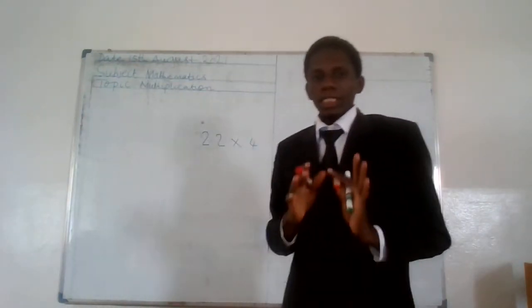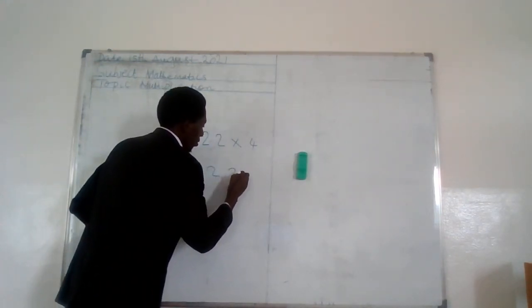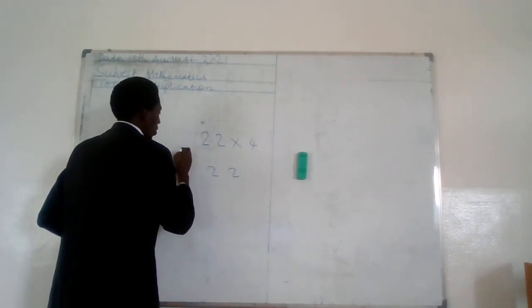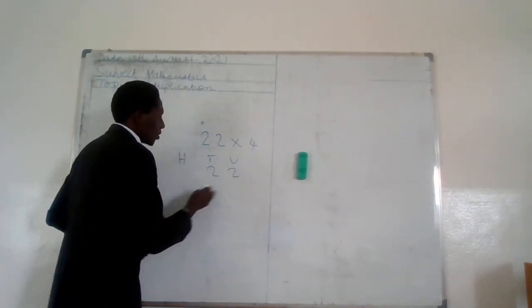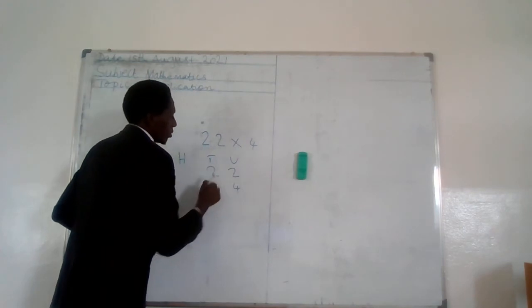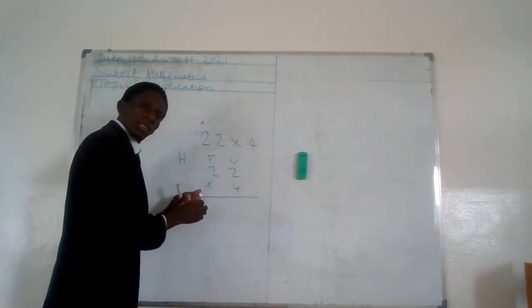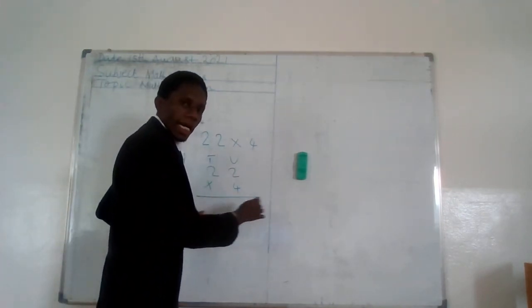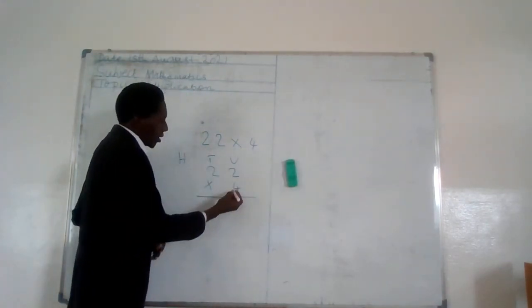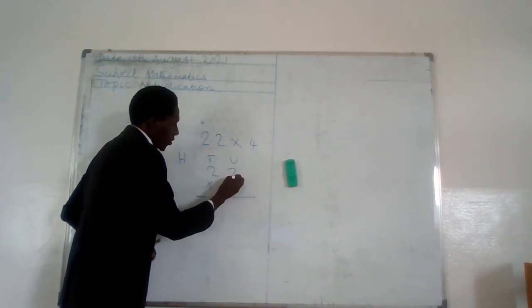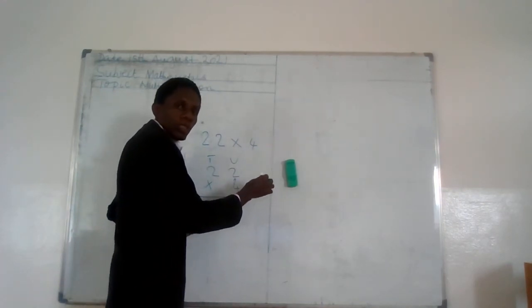So the first thing to do is to arrange the numbers. This is 22. You may use your hundreds, tens, and units to guide you. So this is 4. This is your multiplication sign. This line will guide you so that you don't mix up the numbers. In multiplication, you start from your right and move to your left as you progress.